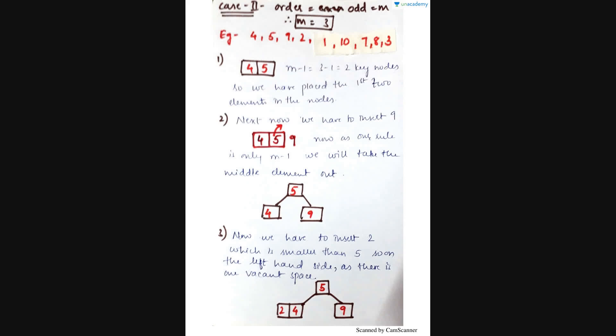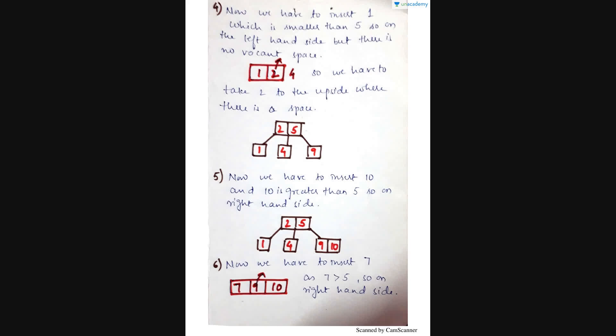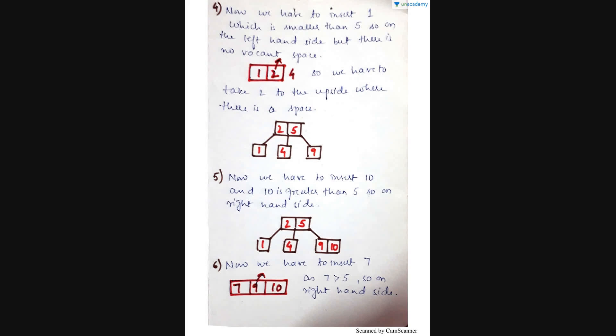Now we have to insert 1. Since 1 is smaller than 5, we arrange in ascending order and take the middle element outside. So 2 will be coming out. We place 2 upward — since only a single node was present and we can have 2 key nodes (m-1 equals 2 keys), we take 2 out, smaller elements than 2 on the left, greater elements than 2 on the right, and elements greater than 5 on the right of 5. This completes the insertion of 1.